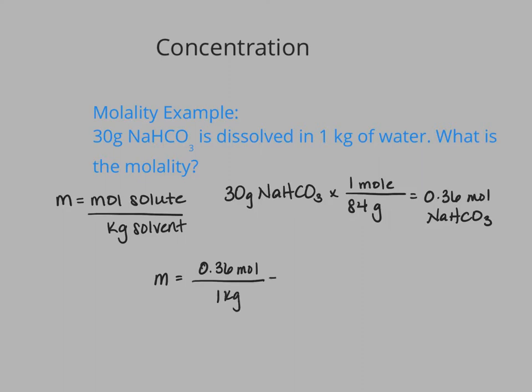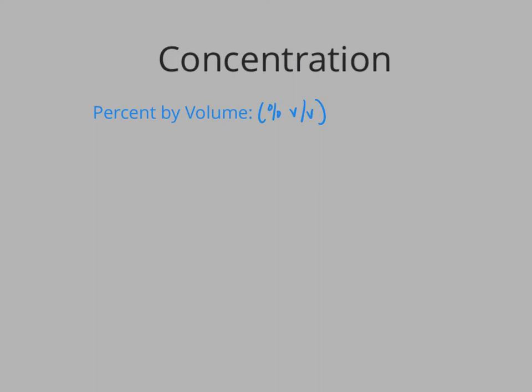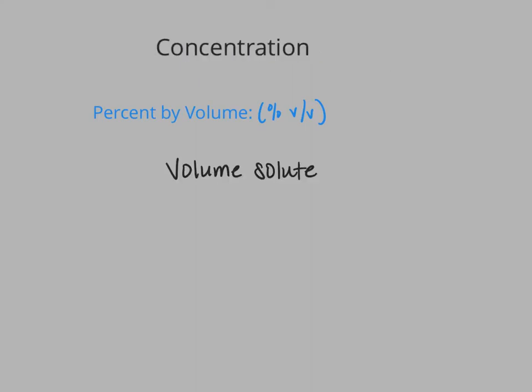So my molality is going to be 0.36 moles divided by one kilogram, and my final answer is going to be 0.36 molal as my concentration. The next calculation method we're going to look at is percent by volume, which is simply comparing our volume of solute to our volume of solution in percent form. To calculate this, we take our volume of solute divided by our volume of solution and multiply that by 100 to get a percent.